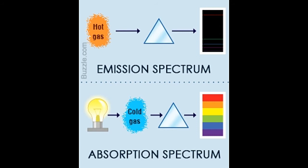When an electron comes down from an excited state to the ground state, it emits a photon of energy. The energy of this photon depends on the difference between the energy levels of the excited state and ground state of that electron. Electrons of an element which are in the ground state may absorb incident energy in order to reach a higher energy state. The frequencies of light transmitted through this substance, with dark bands showing absorbed light, constitute the absorption spectrum of the substance.